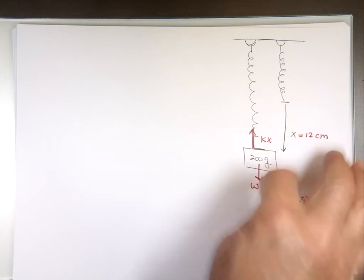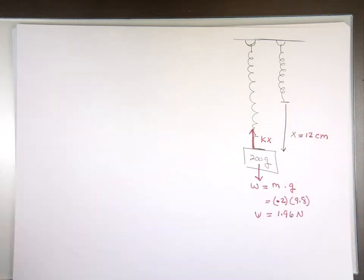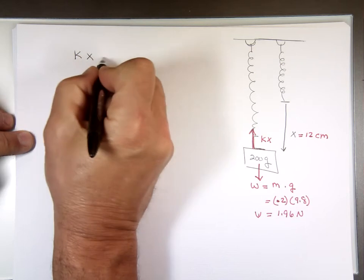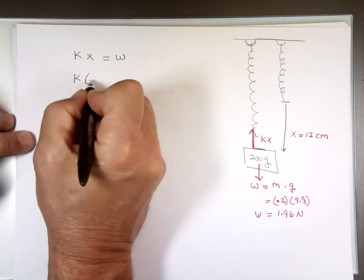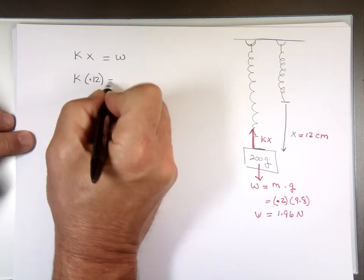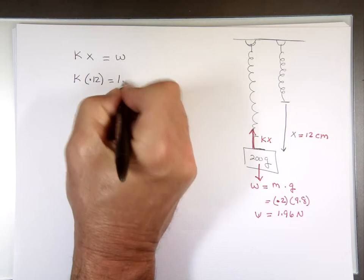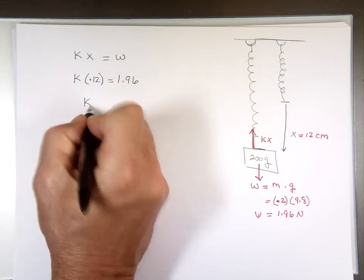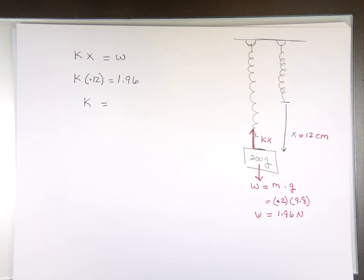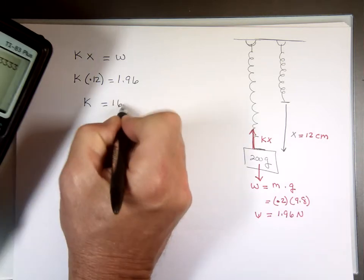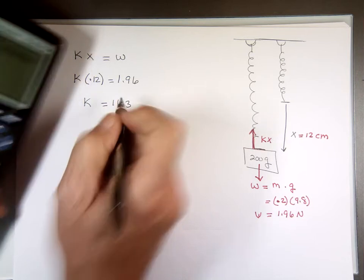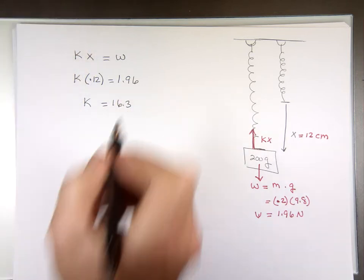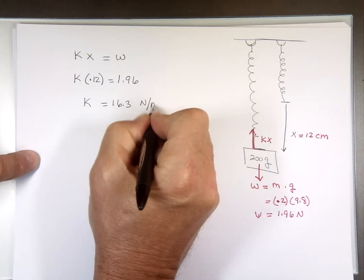So once you know how far you moved, you can find what K is. Now the reason this one is no longer moving is because these two are equal to each other. KX equals the weight. K times X, X is 0.12 meters. 12 centimeters divided by 100 equals 1.96. Can we figure what K is? It's 16.3. Now what are the units? Newtons per meter. The units for K.